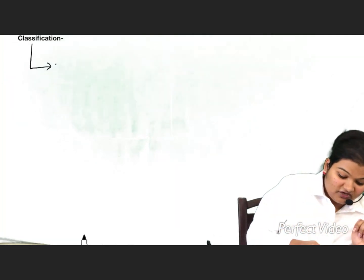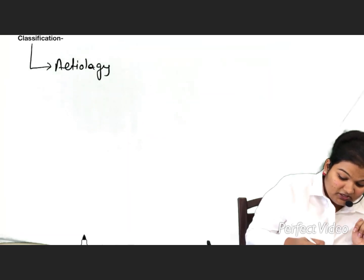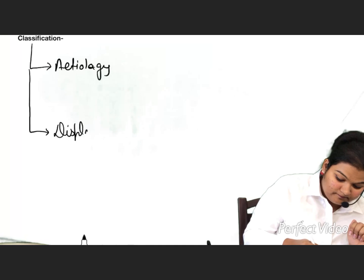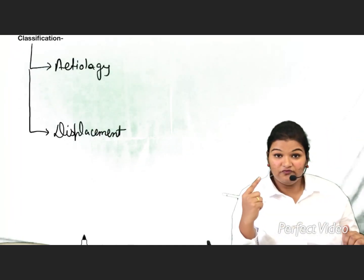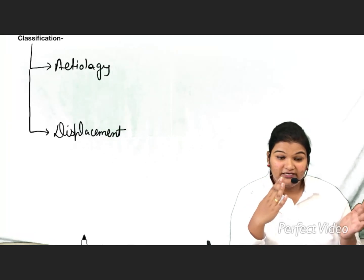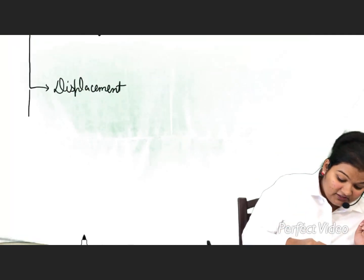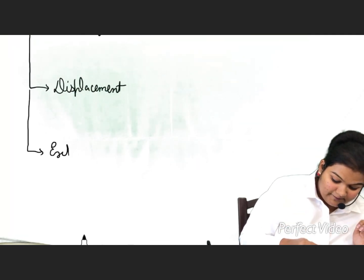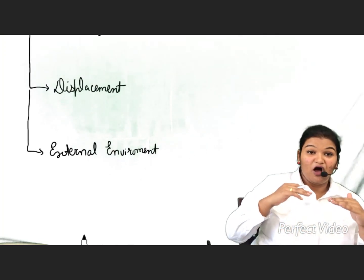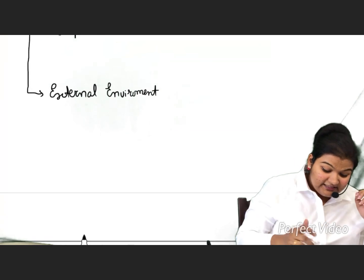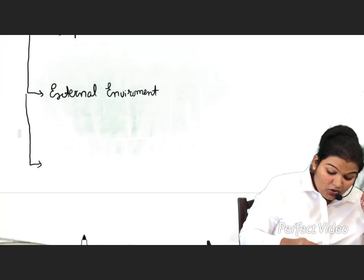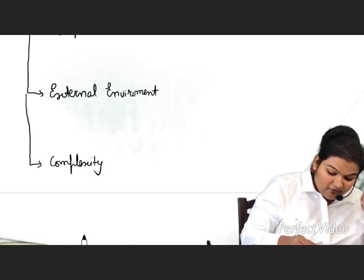Now let us move toward the classification of fractures. Fractures are classified on different bases. The first basis is etiology — the cause of fracture. Then we have displacement — based on the two fracture ends, we differentiate the fractures. Then we have the external environment — how the fracture is related to its external environment.